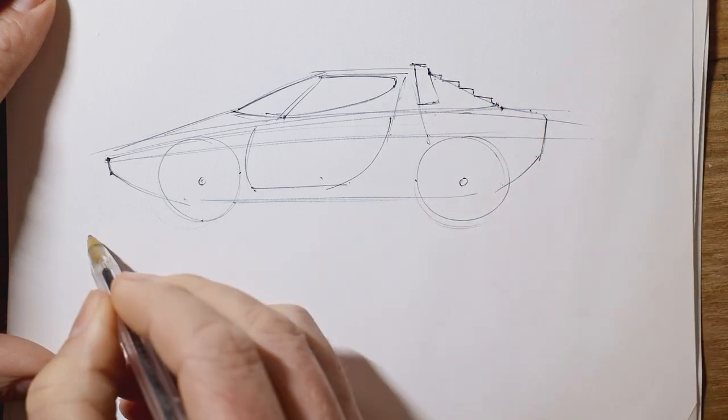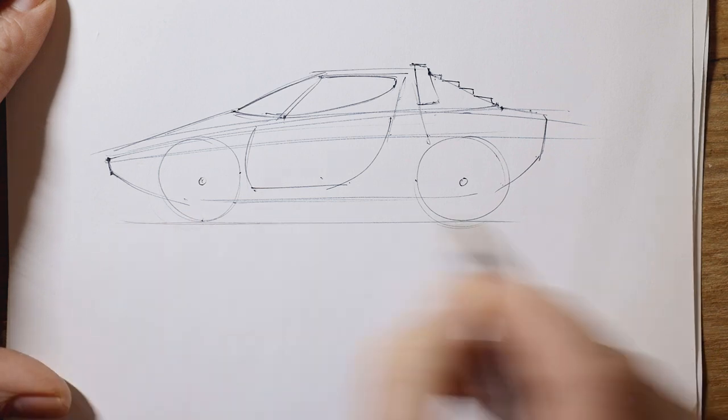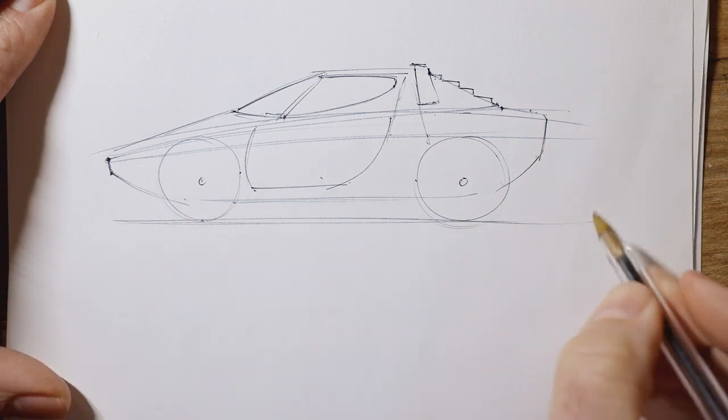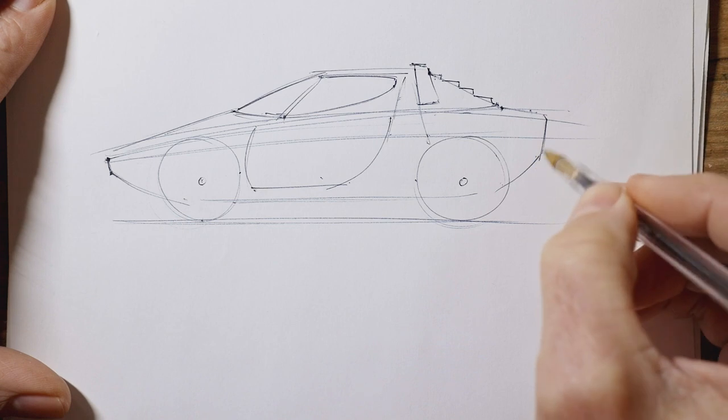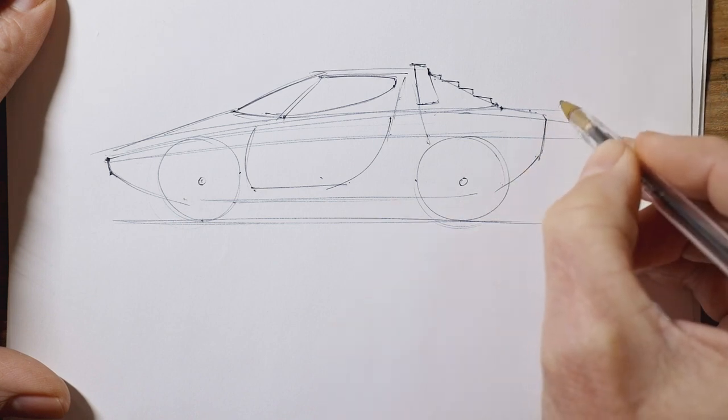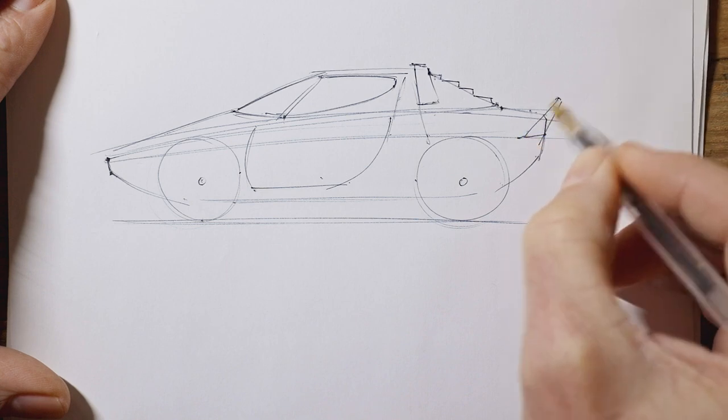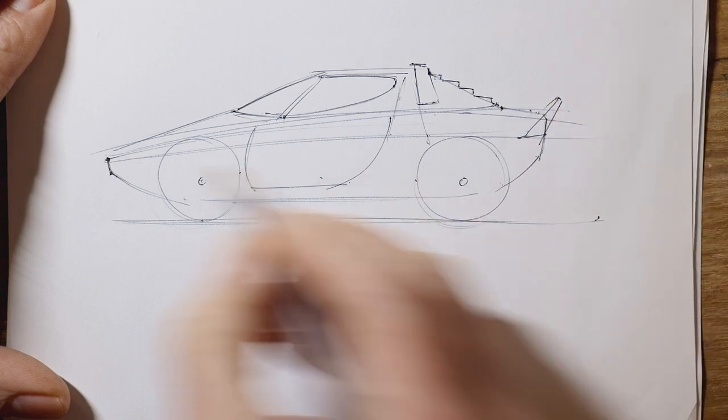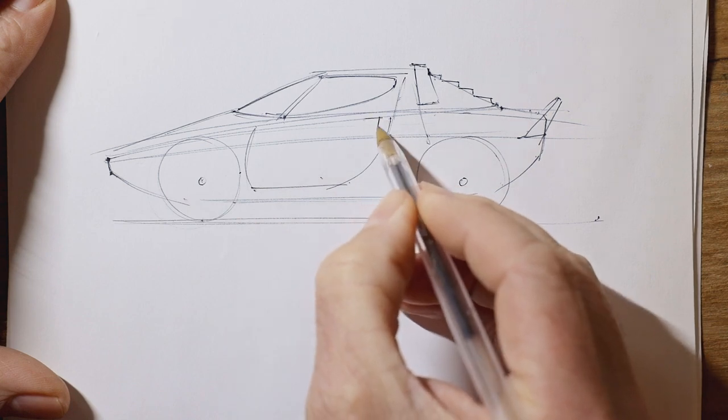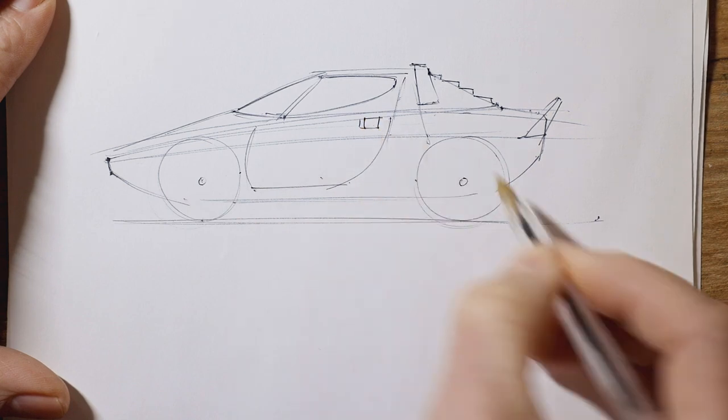And now we can add the floor, that'd be a good thing to add. And any details that there are. So there's a big spoiler at the back, just kind of a triangle, and a door handle here, a rectangle.